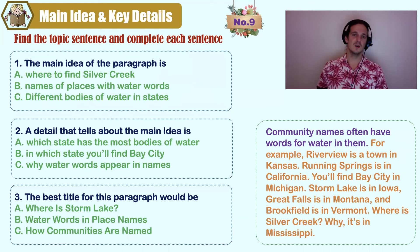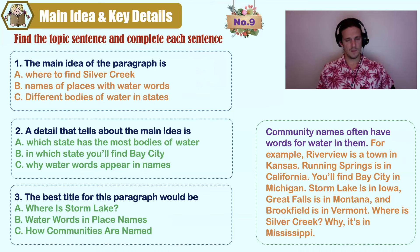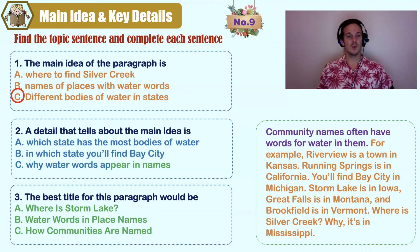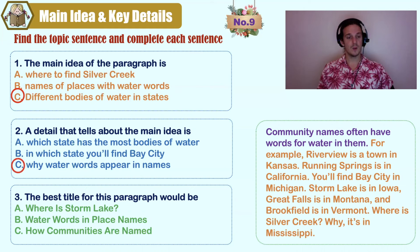What's the main idea? A) where to find Silver Creek, B) names of places with water words, C) different bodies of water in states. Focus on the words in purple: 'Community names often have words for water in them.' The answer is B — names of places with water words. For a detail that tells about the main idea: A) which state has the most bodies of water, B) in which state you'll find Bay City, C) why water words appear in names. Only one detail exists in this paragraph — B, in which state you'll find Bay City.